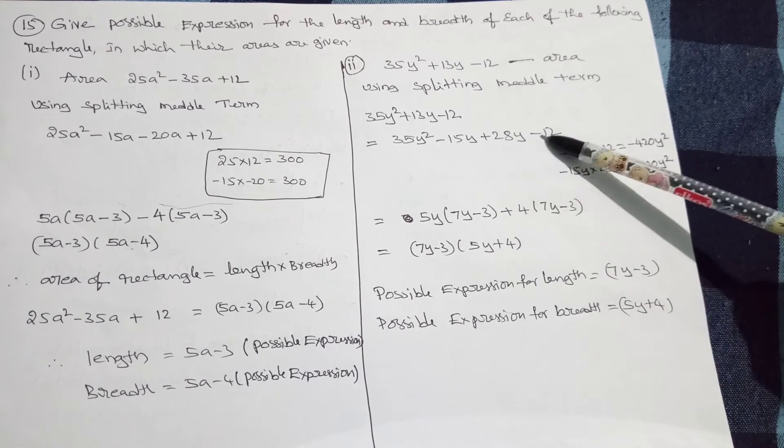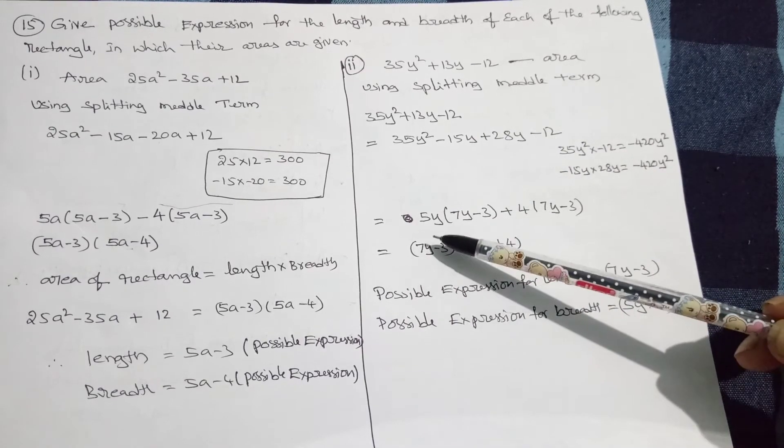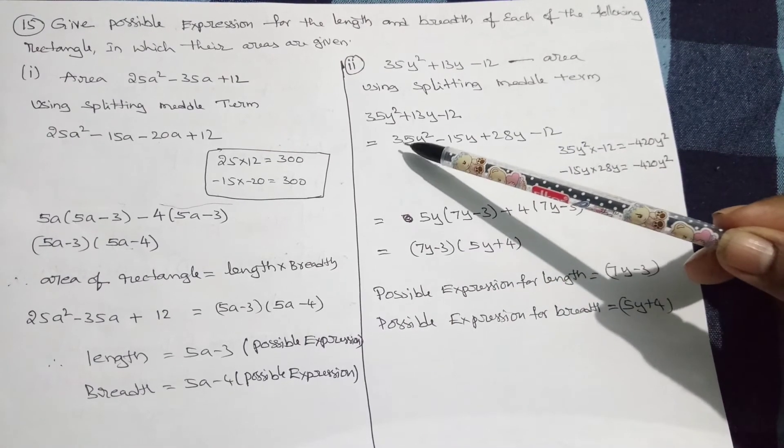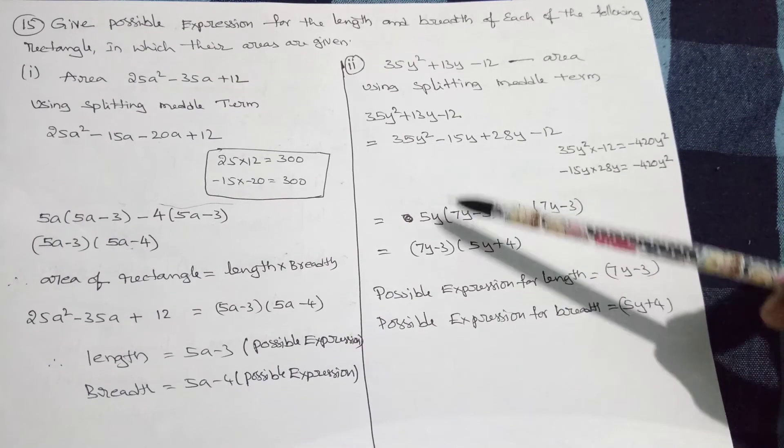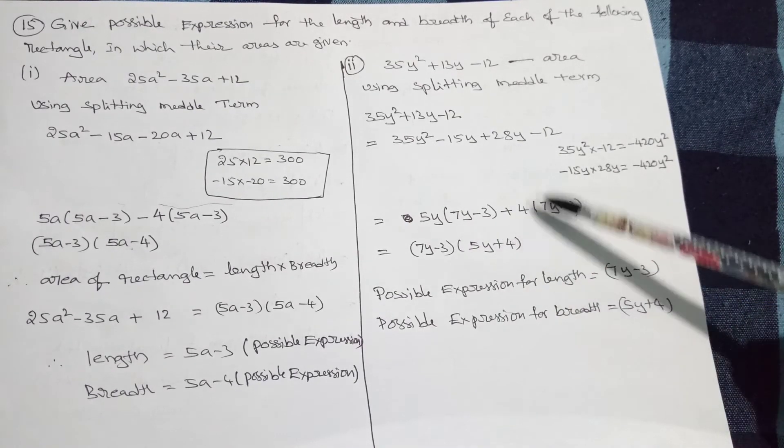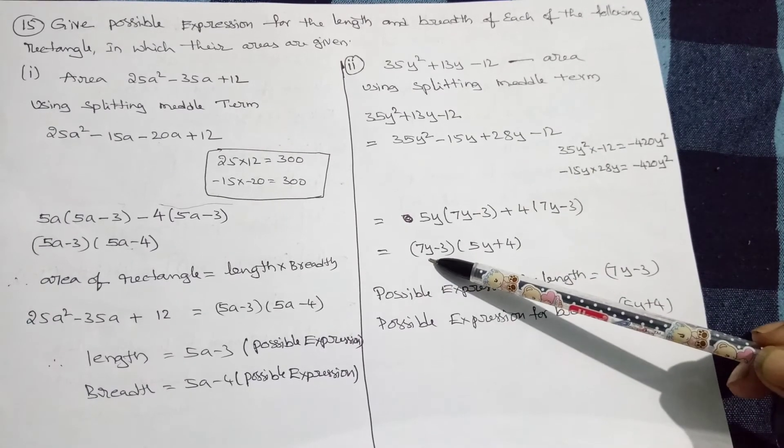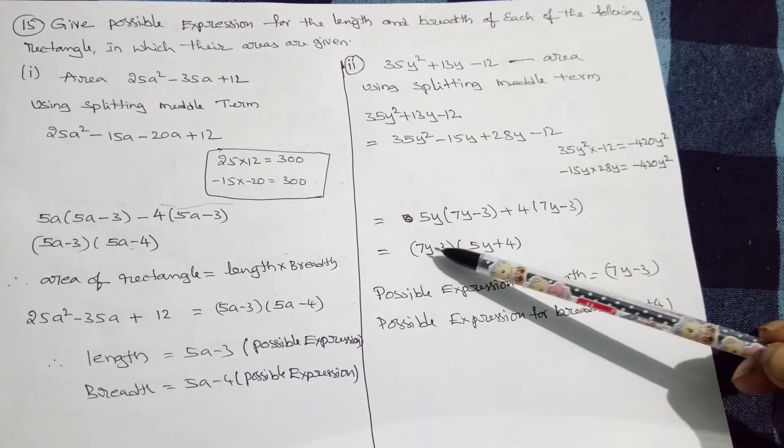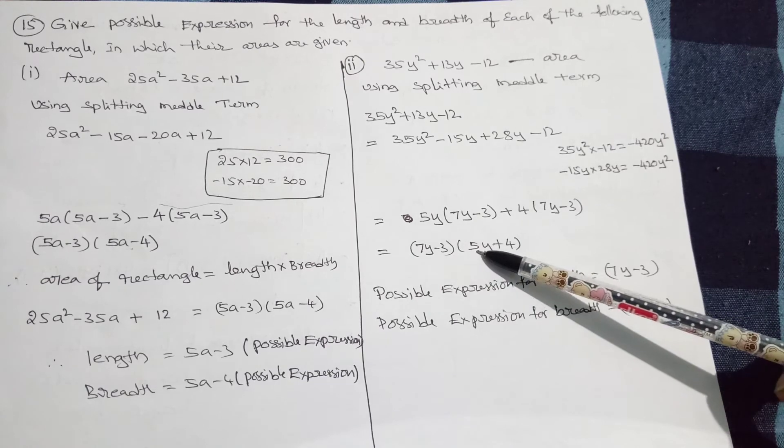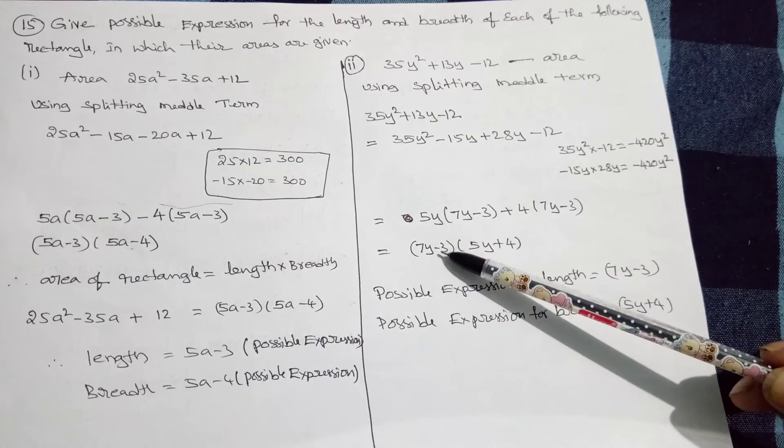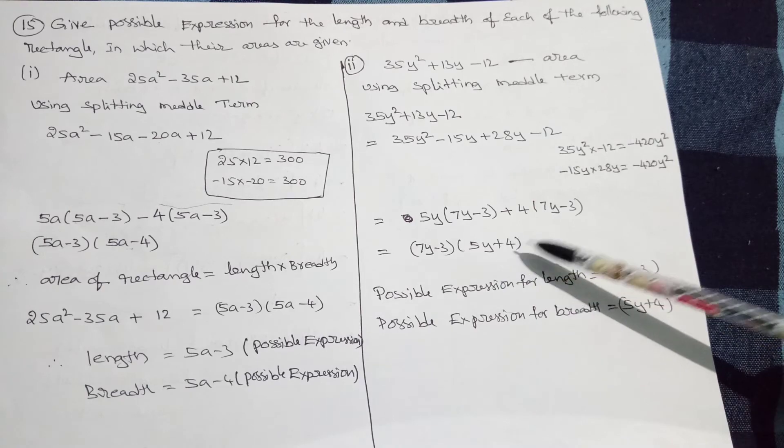Therefore, split into four terms. Now, 5y taken common from these two: 7y - 3. Take -4 common: 7y - 3. Therefore, 7y - 3 common. Therefore, 7y - 3 of 5y + 4.